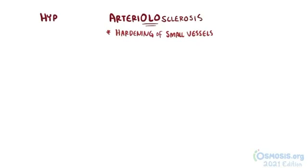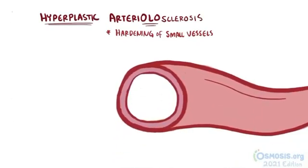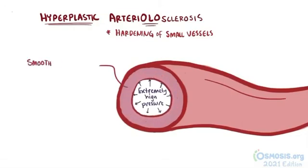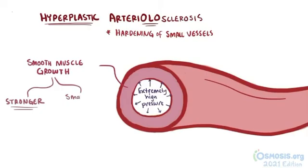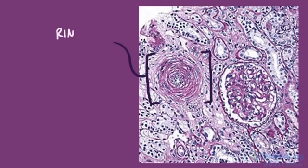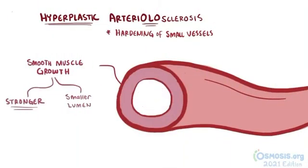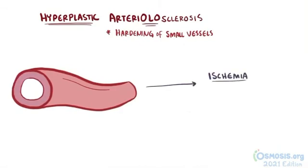Another type of arteriolosclerosis is called hyperplastic arteriolosclerosis, which also happens due to the thickening of the blood vessel walls and occurs when a person has extreme hypertension. The blood vessels compensate for this high blood pressure by adding additional layers of smooth muscle and basement membrane to the blood vessel wall, making the blood vessel stronger. The downside is that it decreases the space in the lumen for blood to pass through. If you look at these hyperplastic blood vessels under a microscope, you can see the rings of smooth muscle with a small lumen, which kind of looks like an onion. Just like in hyaline arteriolosclerosis, hyperplastic arteriolosclerosis can then cause ischemia in the organs it supplies and typically affects the arteriole walls of the kidney.